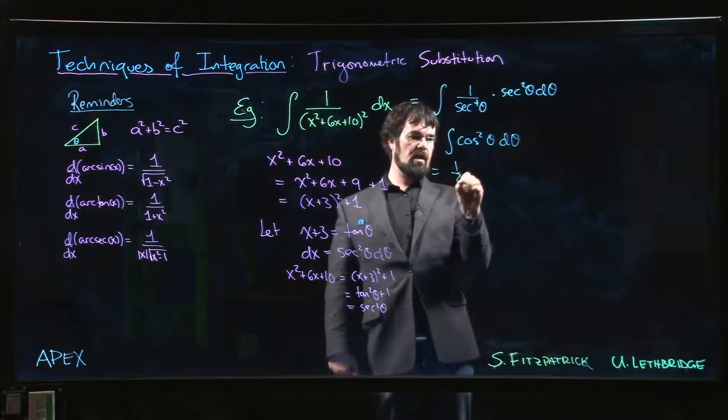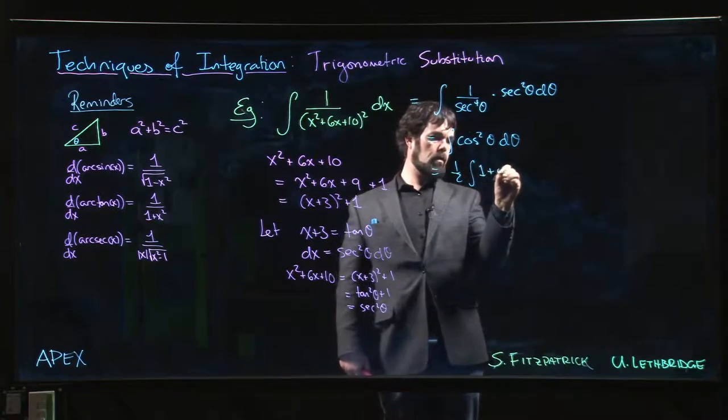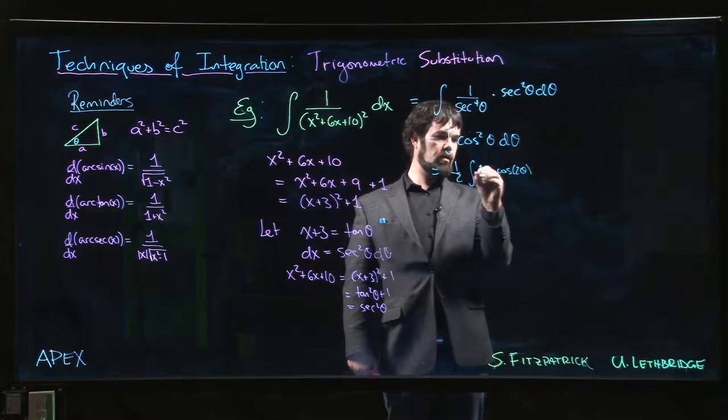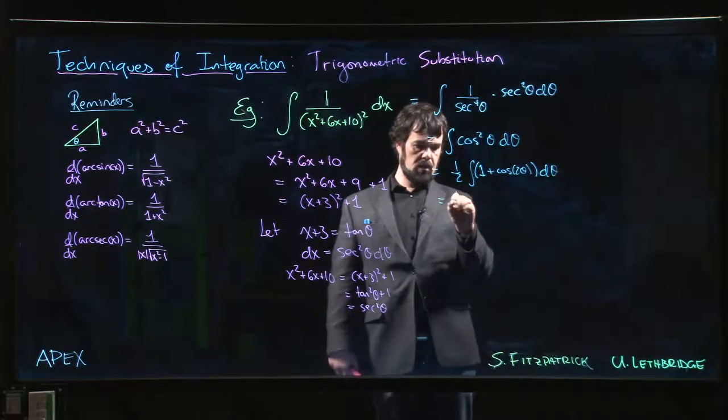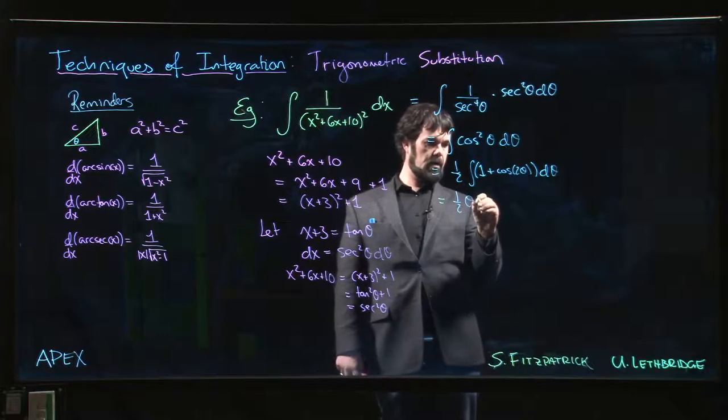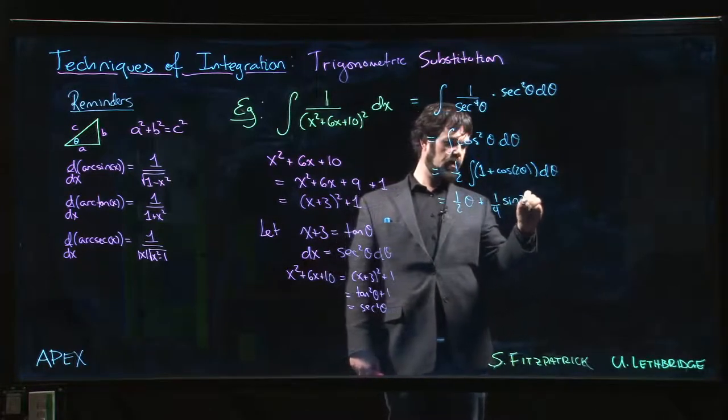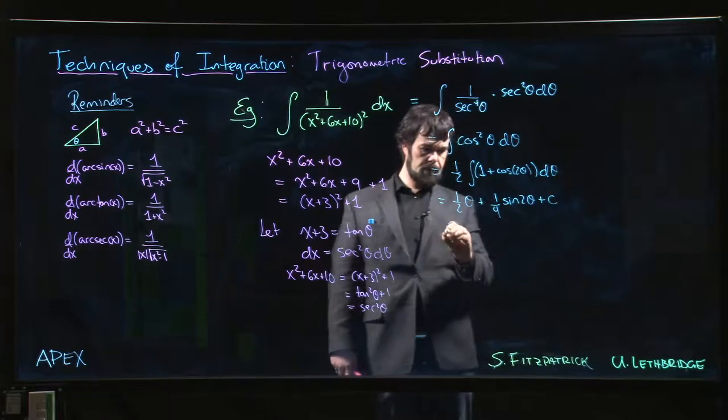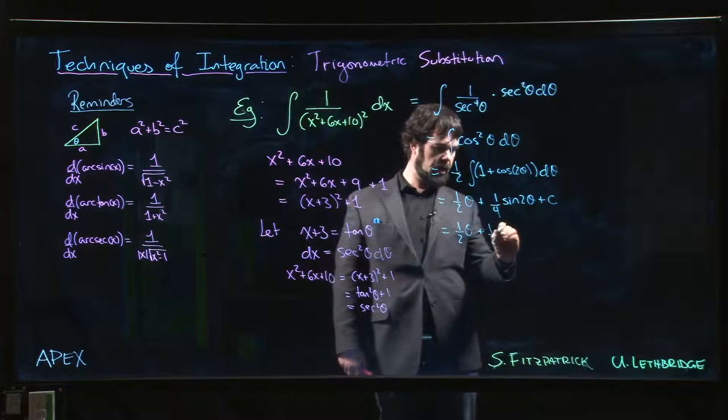Half angle: one half times one plus cos two theta. So we get one half theta plus one quarter sine two theta plus c, so one half theta plus one half sine theta cos theta.